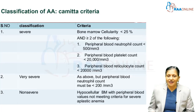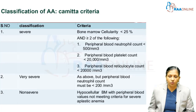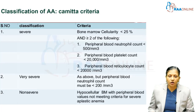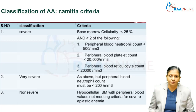In the very severe variety of aplastic anemia, the criteria are as above, but the peripheral blood neutrophil count falls to less than 200 per mm³. In the non-severe variant, there is a hypocellular bone marrow with peripheral blood values not meeting the criteria for severe aplastic anemia.